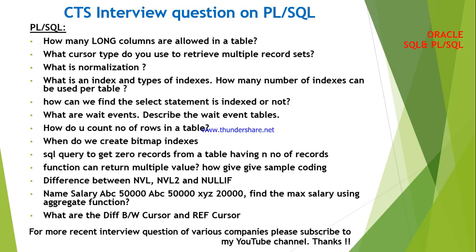They gave a table with name and salary columns. Under name we have A, B, C, A, B, C, X, Y, Z, and under salary we have 50,000, 50,000, and 20,000. The interviewer asked me to find the maximum salary using an aggregate function. This can be achieved by using GROUP BY and HAVING clauses. The next question is: what are the differences between CURSOR and REF CURSOR?